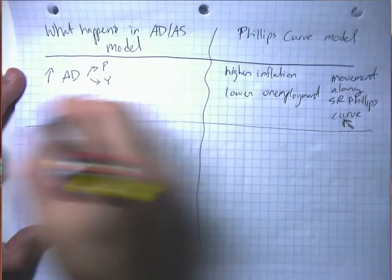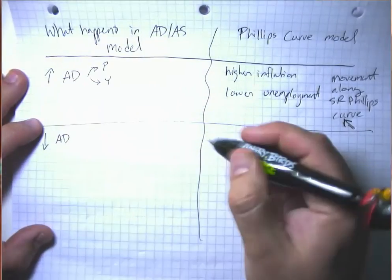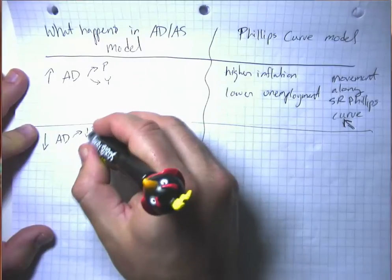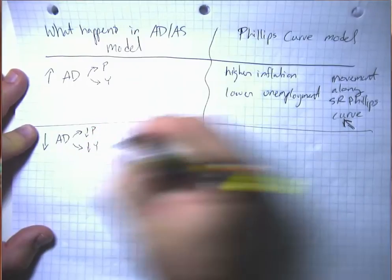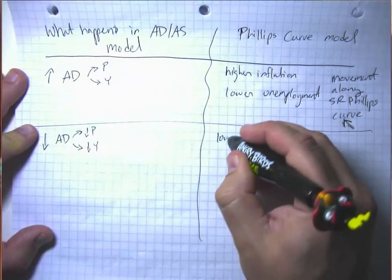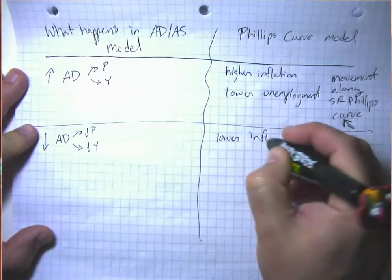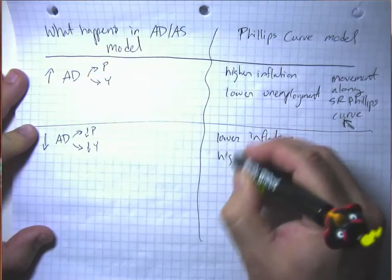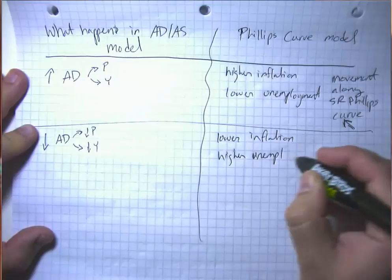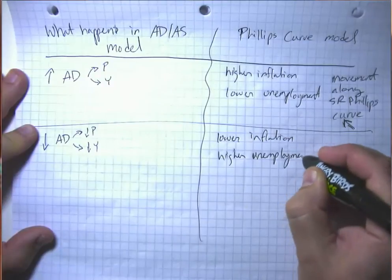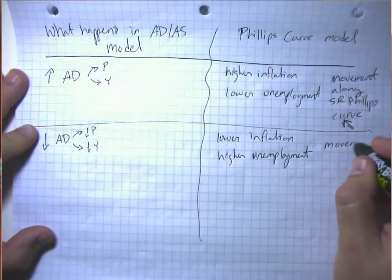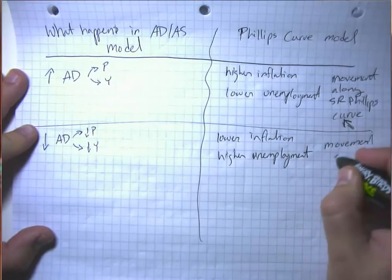If we have a decrease in aggregate demand, then we're going to have the opposite. We're going to have lower prices and lower GDP. So that's going to mean lower inflation and higher unemployment. So that's a movement along the short-run Phillips curve.